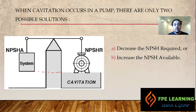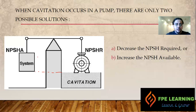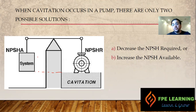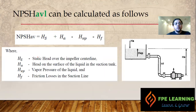Once cavitation happens, it will damage your pump impeller. There may be mechanical damage, loss of pump performance, and mechanical component failures like seals and bearings. Always keep in mind: the calculated available suction head must be greater than that required by the pump. This figure shows that the available supply is not providing the net positive suction head required, resulting in cavitation. Here we have a formula to calculate NPSH directly.